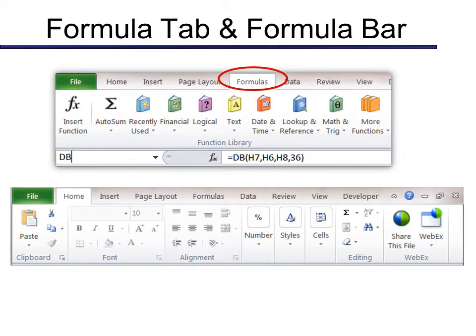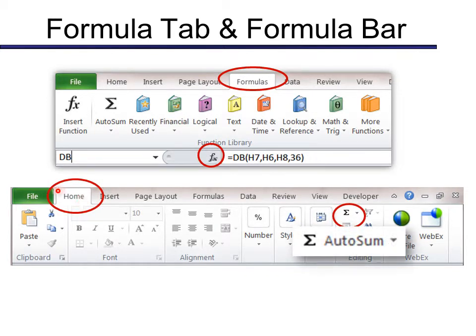You can find formulas, the functions, under the Formulas tab. You can also find it right here on the formula bar under the FX button. You'll see the same button here. But you can also find it on the Home tab. But this one is the most common function, and it's called Autosum.